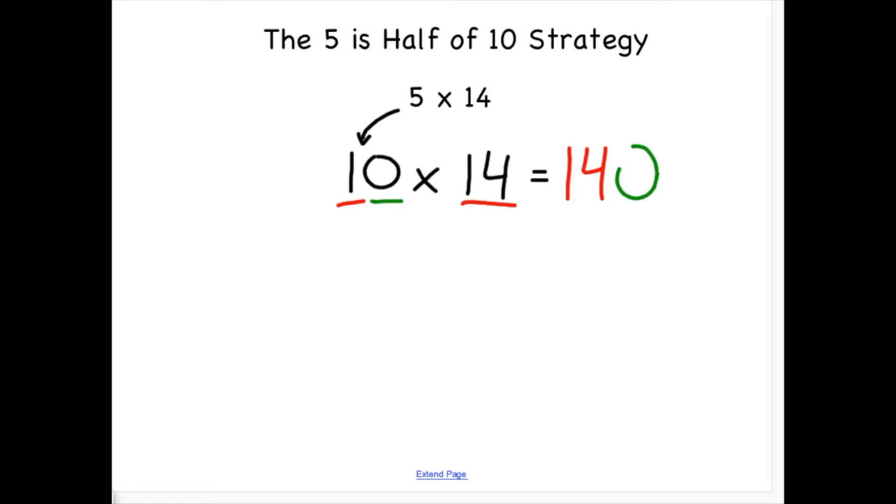Now I am going to take my factor of 10 and cut it in half to get to my original problem, hence the name 5 is half of 10. This means I need to also cut my answer or product in half to get the answer to my original problem.